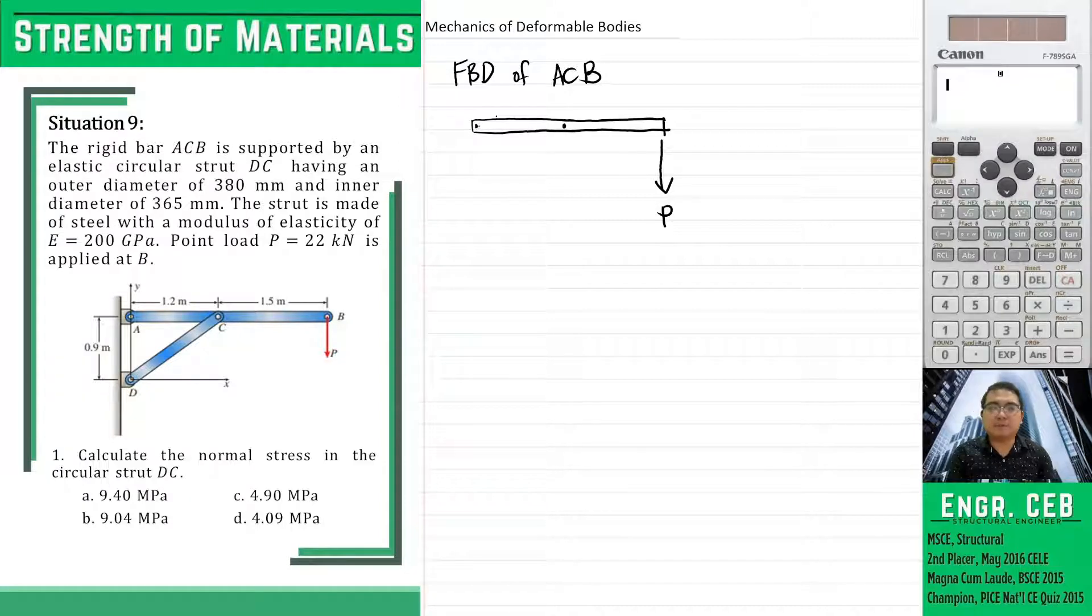As you can see, there is a pin support at A. So we will provide two components of reaction, AY and AX. At C, we have an internal pin, so we will also provide two components of reaction. Note that all the directions of the reactions are just an assumption. So later on, we can confirm if we have a correct assumption or not.